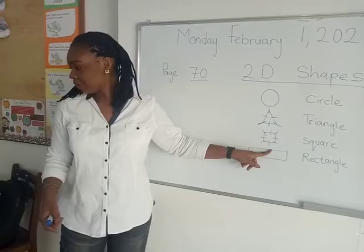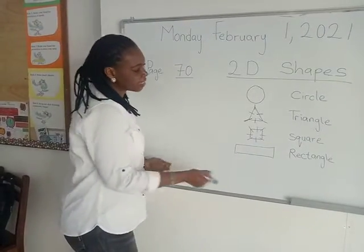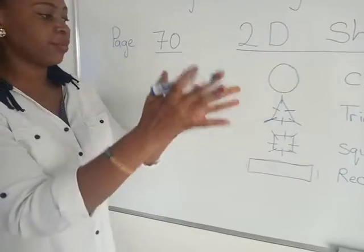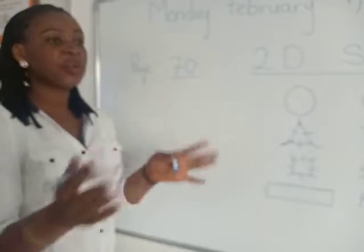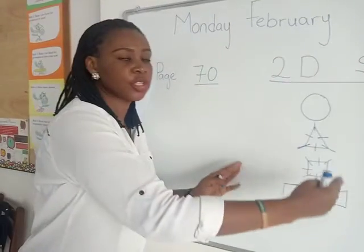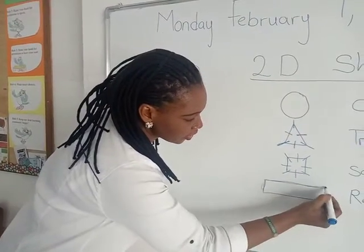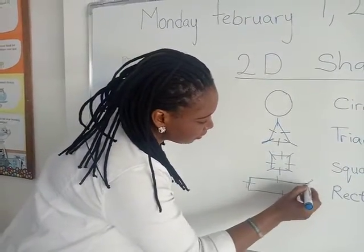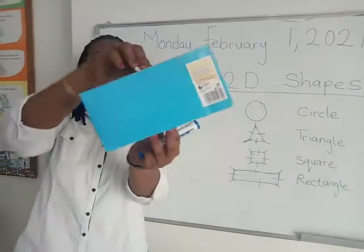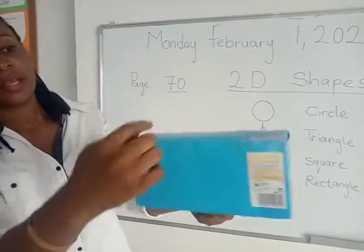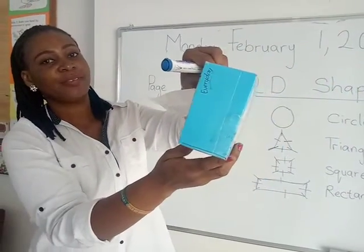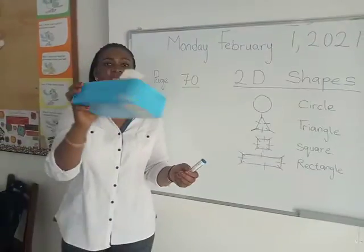Now we move to the next shape, which is a rectangle. The rectangle has two sides equal and the other two sides equal as well. Two sides of the rectangle are longer than the other two sides — this side and this side are shorter than this side. A rectangle has four sides and four corners. Find an object shaped like a rectangle at home.